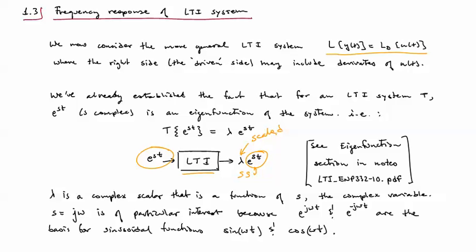This is the definition of, or characteristic of, an eigenfunction of a system. If a system transforms a function and the result of that transformation is that same function but scaled, then that function is an eigenfunction. And for LTI systems, the response to an e to the st excitation will always be e to the st, but simply scaled by lambda.